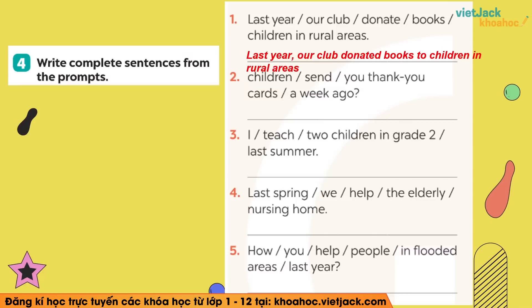Number 2: mình có a week ago — thì quá khứ đơn. Nhưng một điều rất là quan trọng đó là có dấu hỏi chấm — vậy đây là câu hỏi. Thì các bạn nhớ phải mượn trợ động từ did đặt lên đầu câu nhé: Did children send you thank-you cards a week ago? — Bọn trẻ đã gửi cho bạn cái thiệp cảm ơn vào một tuần trước chưa?